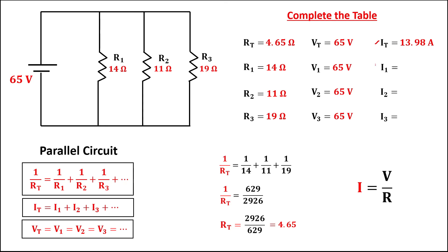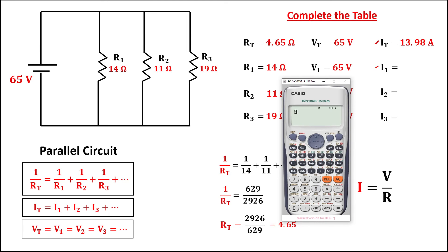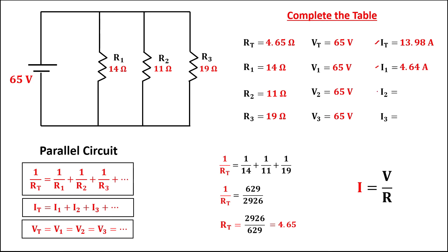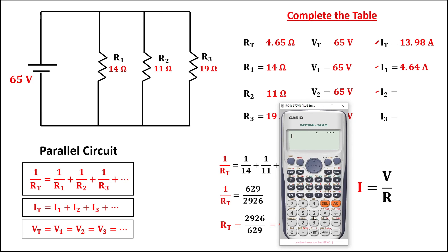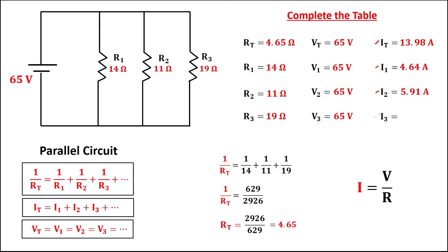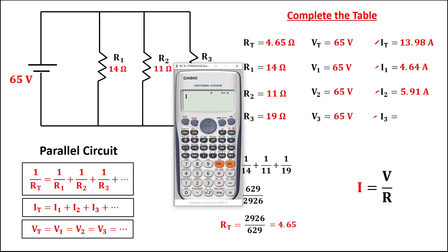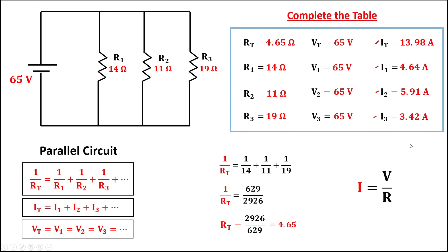Then for current 1, we have 65 divided by the resistance, that's 14, equals 4.64 amperes. Then for current 2, we have the voltage divided by the resistance, equals 5.91 amperes. And for the last one, we have 65 divided by 19 equals 3.42 amperes.